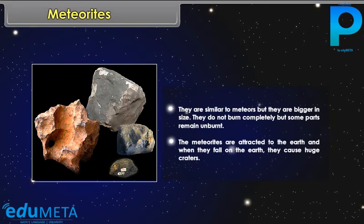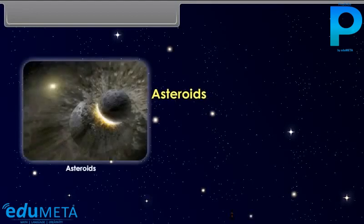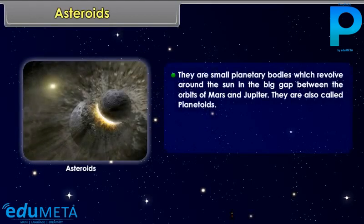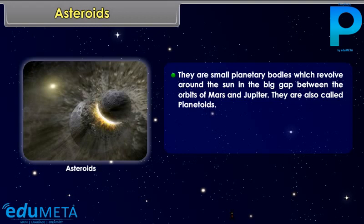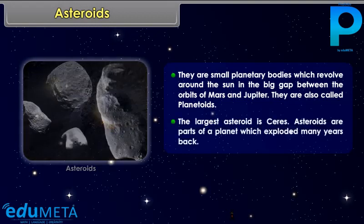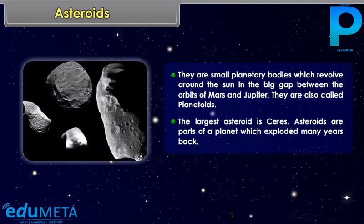Asteroids are small planetary bodies which revolve around the Sun in the big gap between the orbits of Mars and Jupiter. They are also called planetoids. The largest asteroid is Ceres. Asteroids are parts of a planet which exploded many years back.